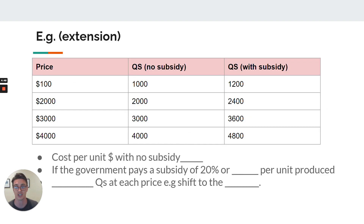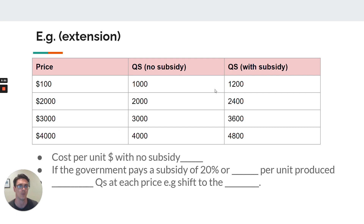Here's a quick extension to understand how subsidies work. This is a quantity supplied schedule. When a subsidy is given to producers for every unit of good or service they provide, this means they'll produce more at each price. You can calculate the cost per unit with no subsidy — it's going to be $10. And if the government pays a subsidy of 20%, you can calculate what the cost per unit might be — it's going to decrease the cost per unit, so they'll supply more at each price. This is a little extension; if it helps, use it.